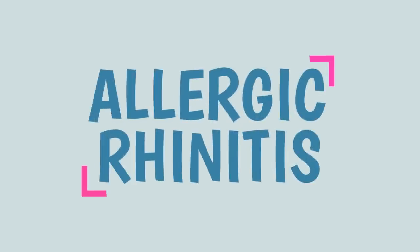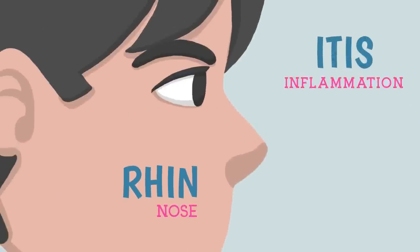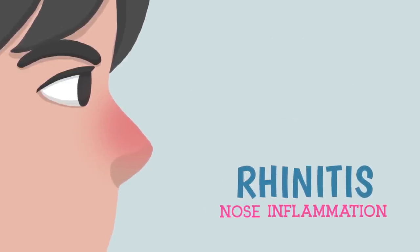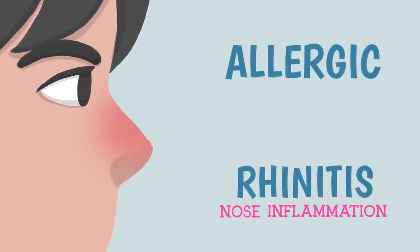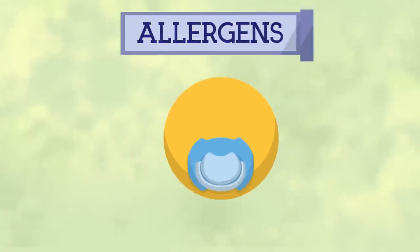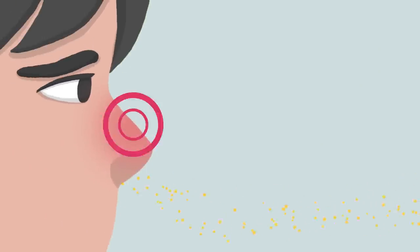Allergic rhinitis: 'rhine' comes from the Greek word meaning nose, and 'itis' means inflammation, so it means inflammation of the nose. 'Allergic' means it is caused by allergens. Allergens are anything harmless or neutral that can be inhaled in air by the nose and trigger an excessive immune reaction.